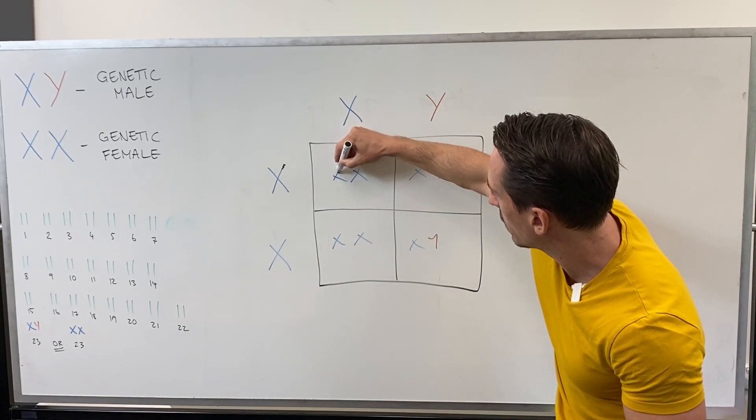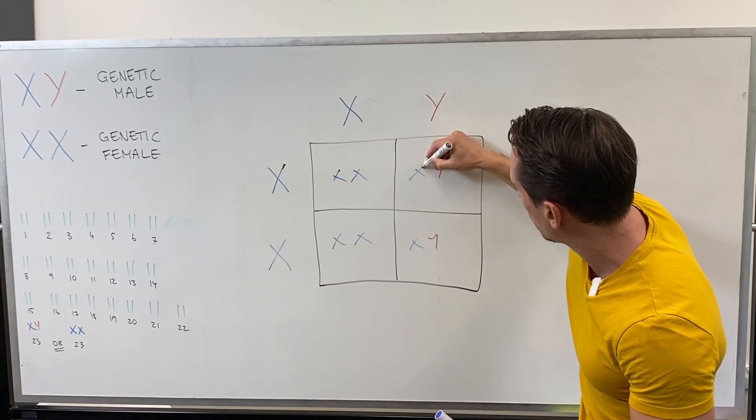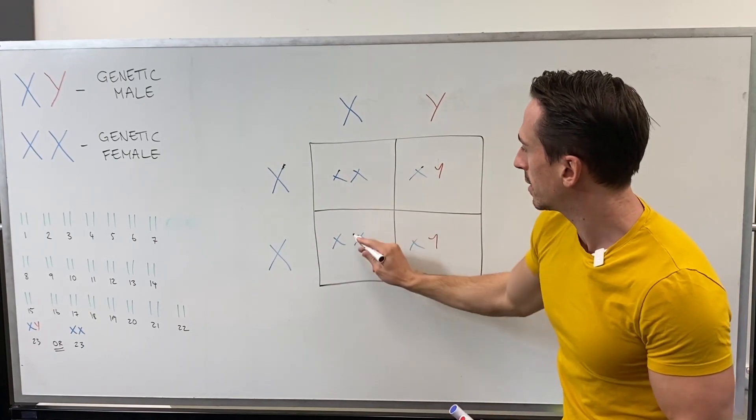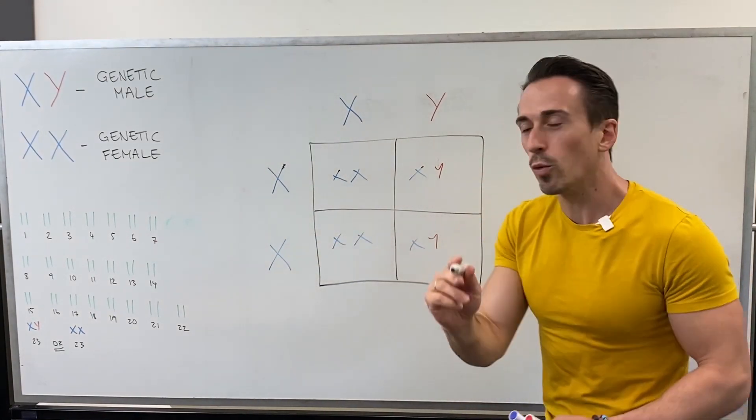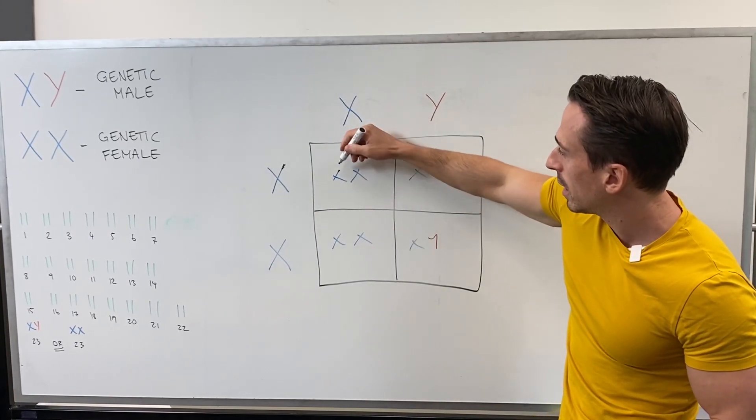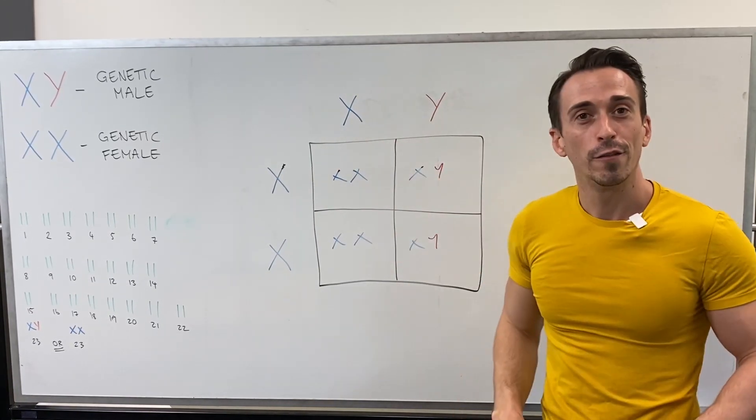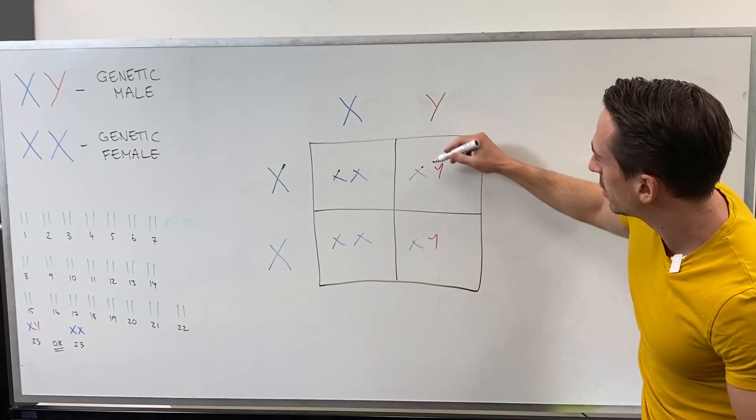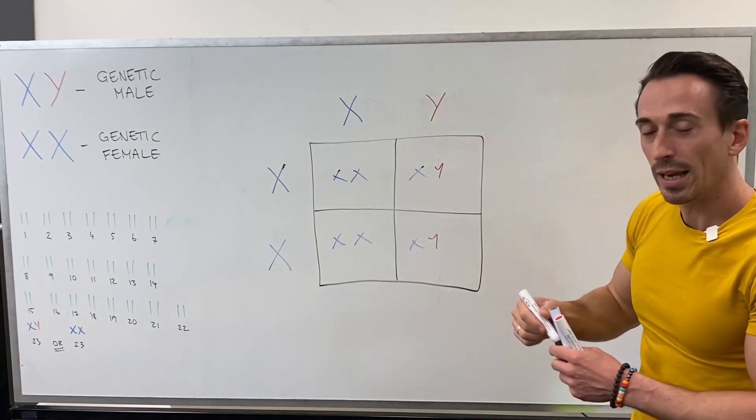Here we go. So that one there, that one there, that's the same, that's the same. So what we can see is that this genetic female is also a carrier for haemophilia. This genetic male is carrying that as well.